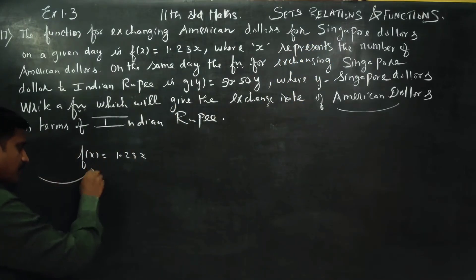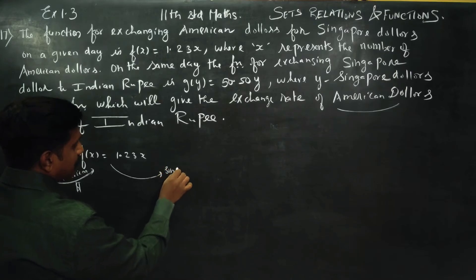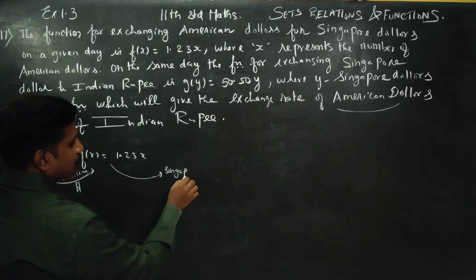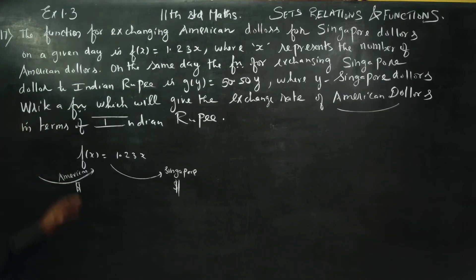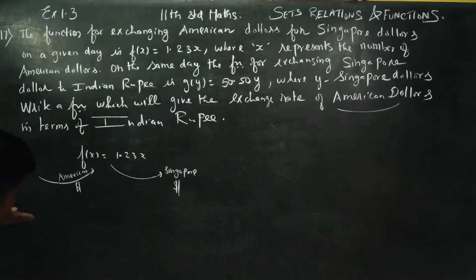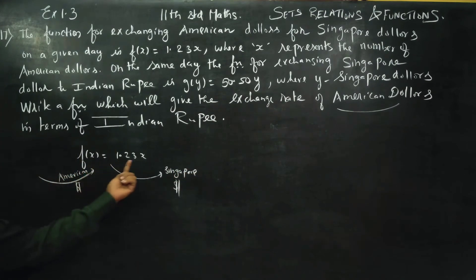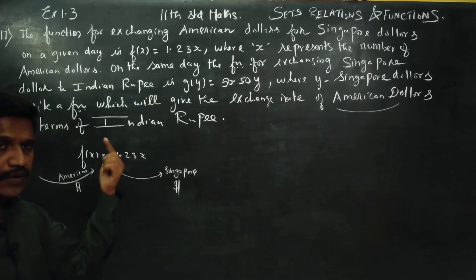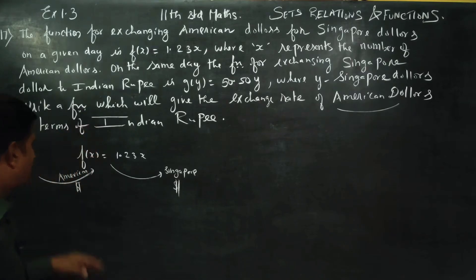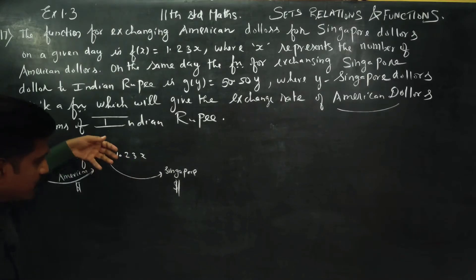If American Dollars is the input, the output is Singapore Dollars. For example, 1 American Dollar gives 1.23 Singapore Dollars. American Dollars 2: 2 into 1.23 equals 2.46 Singapore Dollars.